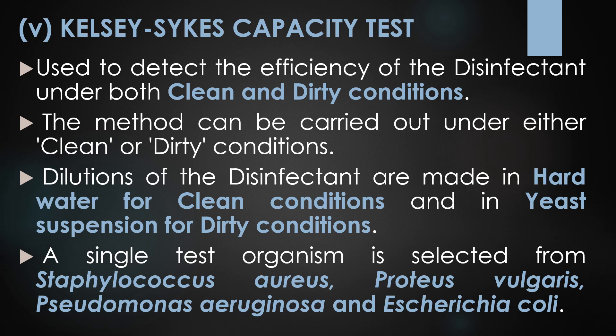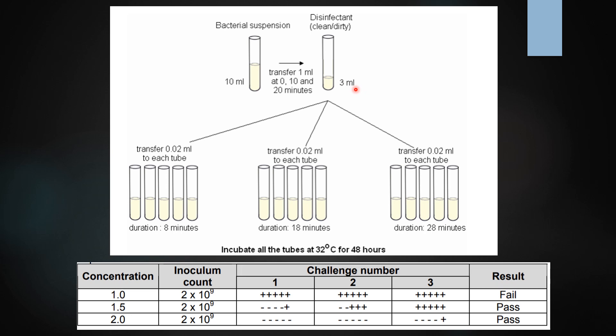The final method is the Kelsey-Sykes capacity test, used to detect disinfectant efficiency under both clean and dirty conditions. Dilutions are made in hot water for clean conditions and in yeast suspension for dirty conditions. Depending on the disinfectant type, a single organism is selected from Staphylococcus aureus, Pseudomonas aeruginosa, Proteus vulgaris, or E. coli. One ml of bacterial inoculum is added to the disinfectant in three successive lots at 0, 10, and 20 minutes.